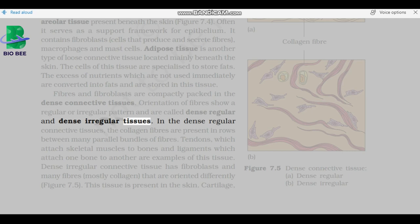Orientation of fibers show a regular or irregular pattern and are called dense regular and dense irregular tissues. In the dense regular connective tissues, the collagen fibers are present in rows between many parallel bundles of fibers. Tendons, which attach skeletal muscles to bones, and ligaments, which attach one bone to another, are examples of this tissue. Dense irregular connective tissue has fibroblasts and many fibers, mostly collagen, that are oriented differently. This tissue is present in the skin.